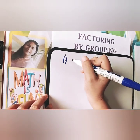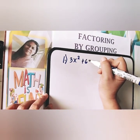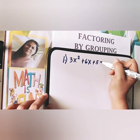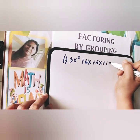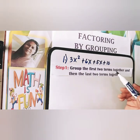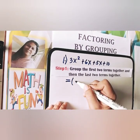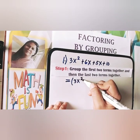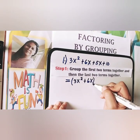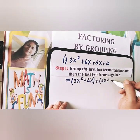Example number one: 3x squared plus 6x plus 5x plus 10. Let's follow step number one — group the first two terms together and then the last two terms together. So it will become (3x squared plus 6x) plus (5x plus 10).